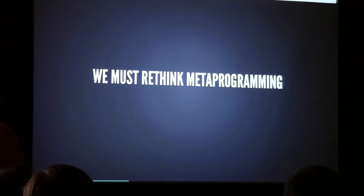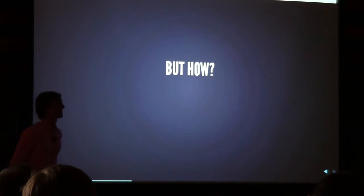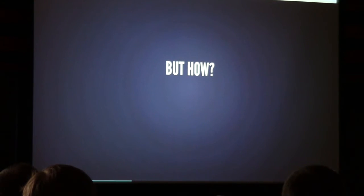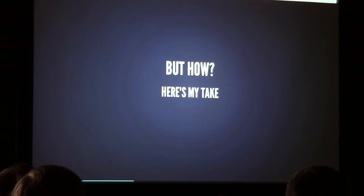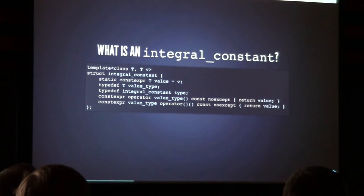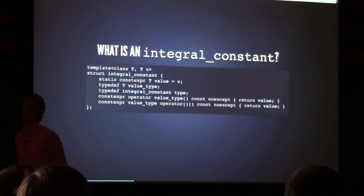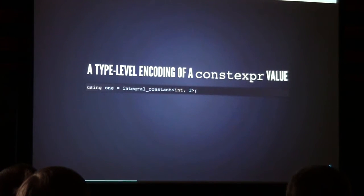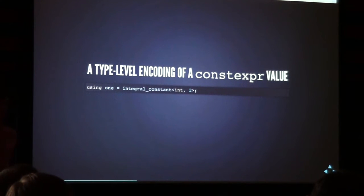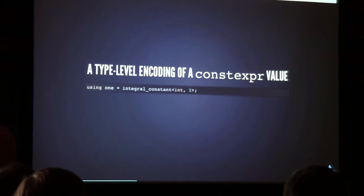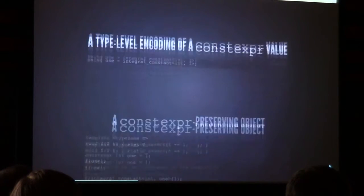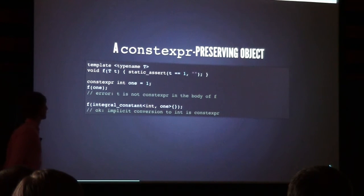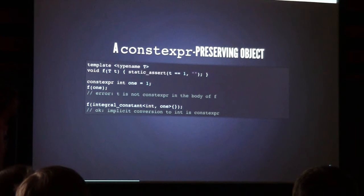My claim is that we must rethink metaprogramming. But how should we do it? First, let's ask: what is an integral constant — like std::integral_constant or an MPL integral constant? There are many ways to see it. First, we can see an integral constant as a type-level encoding of a compile-time entity — a type-level representation of a constexpr value of an integral type.